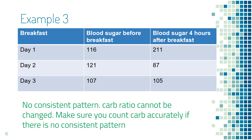In this next example, he checks if the carb ratio for breakfast is right. He checked blood sugar before breakfast, took a bolus, ate, and checked four hours after. Blood sugar went up on day one, down on day two, and stayed about the same on day three. Because there is no consistent trend, he cannot change the carb ratio.